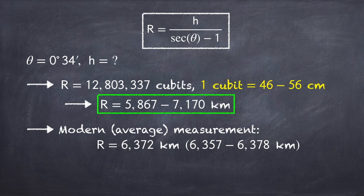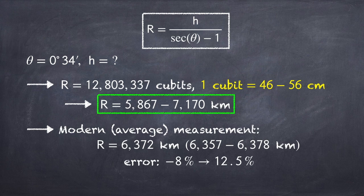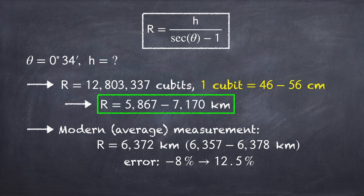Modern measurements of the earth give an average radius of 6,372 kilometers. I say average because the earth is not a perfect sphere, and the radius is a little shorter at the poles than it is at the equator.